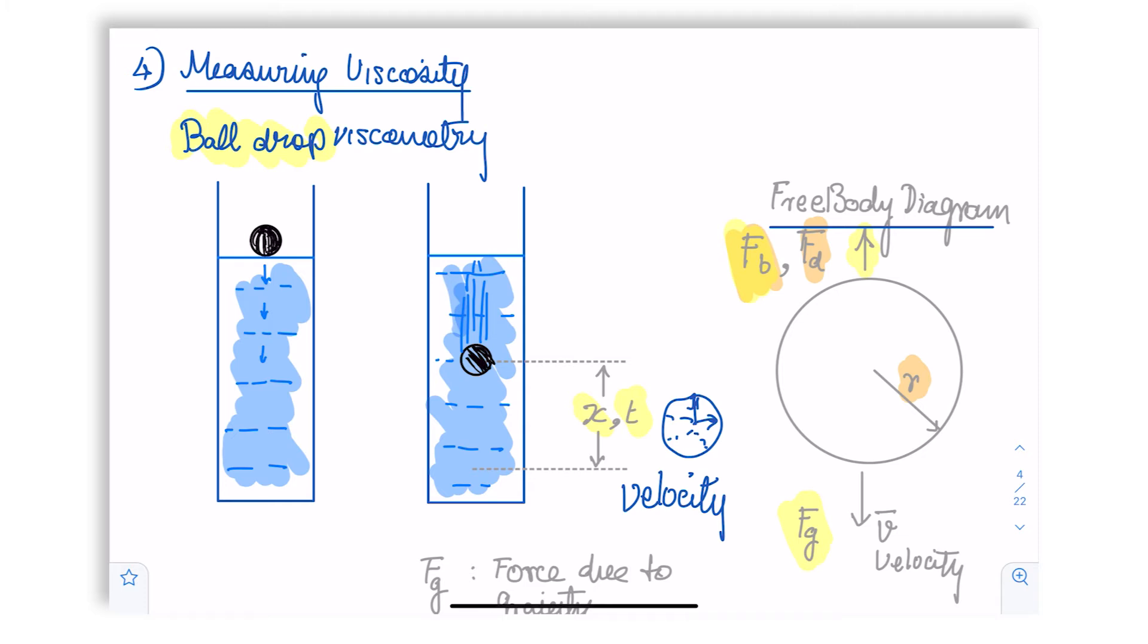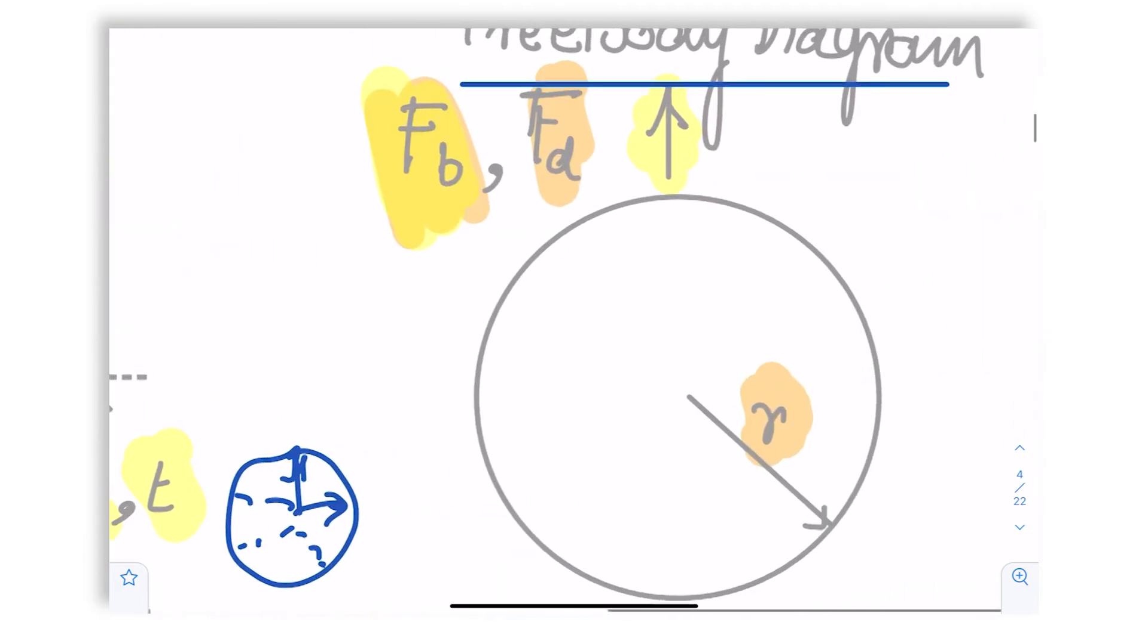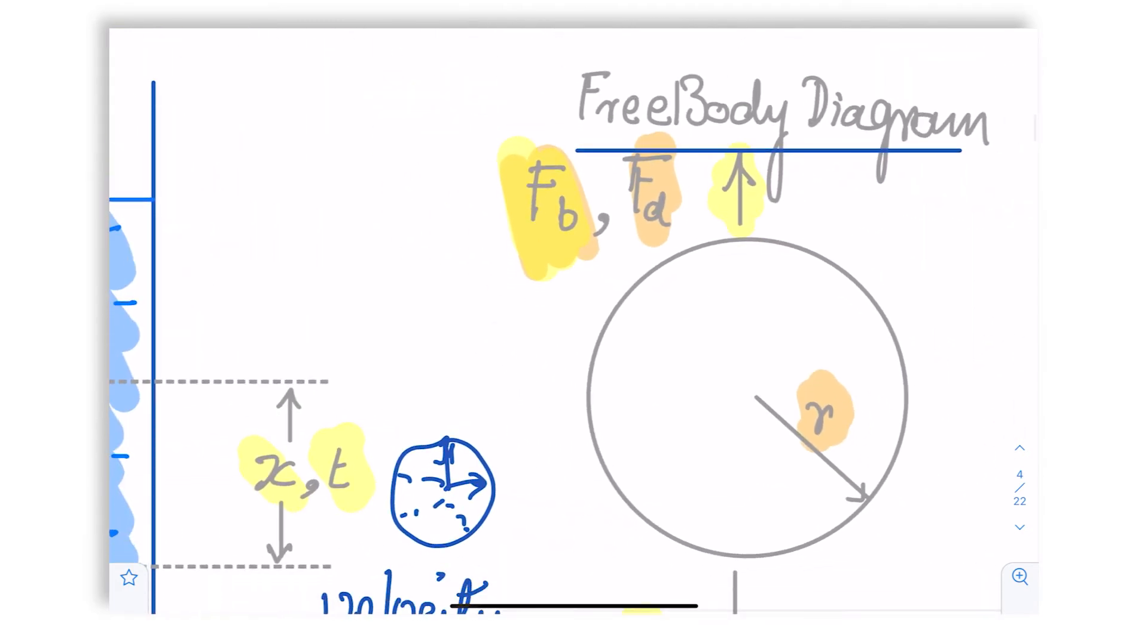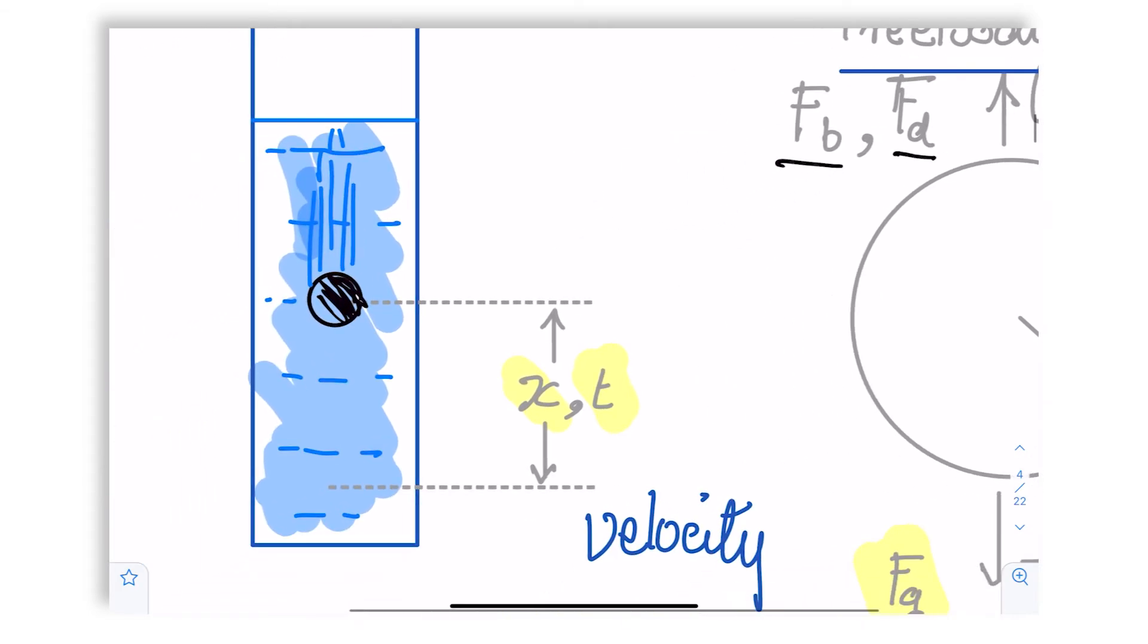So if we draw a free body diagram, which means we ask what all are the forces acting on the ball, then we expect that the ball of radius R will experience a buoyant force that is FB and a drag force FD opposing the motion. Motion, remember, is this way. The ball is falling, correct?